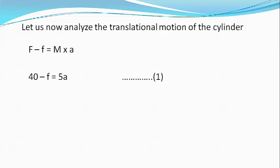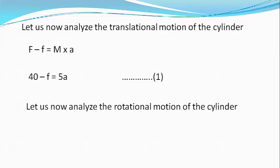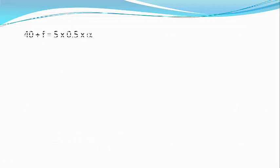Analyzing the rotational motion of the cylinder, we get capital F into R plus small f into R equals I alpha which equals M into R square into alpha or 40 plus small f equals 5 into 0.5 into alpha.